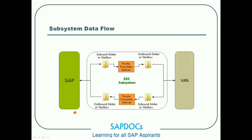Looking at the detailed flow when we have three different systems — SAP, EDI subsystem, and the VAN — for the outbound flow, data comes to an inbound folder or mailbox. Logically, think of a mailbox as just a directory in a Windows environment. Once files are received in this mailbox, the subsystem does three things: it routes, translates, and delivers to the outbound mailbox. From the outbound mailbox, the data goes to the VAN.